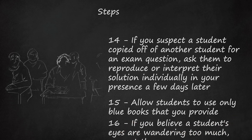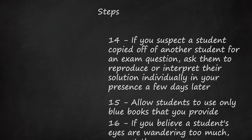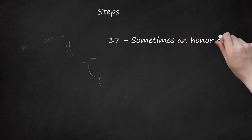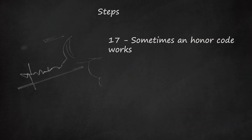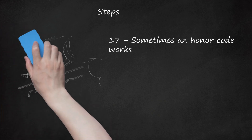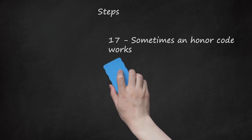Step 16: If you believe a student's eyes are wandering too much, re-seat them. Step 17: If they choose to comply, take no action. If they are unwilling to comply, you can assume that they were cheating or had the intention of cheating. Step 18: If your honor code states that students are not only obligated to not cheat, but also that they are obligated to report any cheating they suspect, this sometimes works well. On assignments and exams, you can require that they sign an honor pledge stating that they did not cheat, nor did they fail to report any cheating they noticed. You may choose to not grade an assignment or exam on which the honor pledge is not signed.